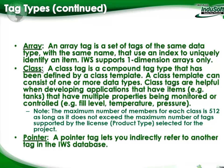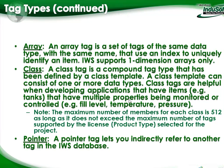A class tag is a compound tag type defined by a class template. The template can include one or more different data types within the class — some reals, some integers, some strings, and so on. Class tags are helpful when developing applications with items such as tanks that have multiple properties being monitored or controlled, such as level, temperature, pressure, or contents. The maximum number of members for each class is 512, as long as it doesn't exceed the overall tag count supported by your license.